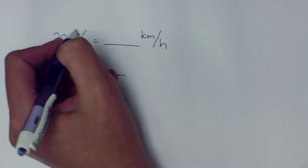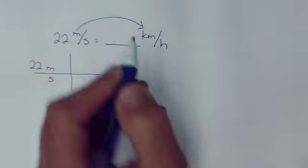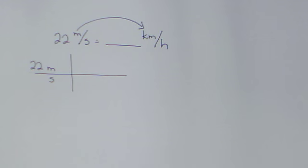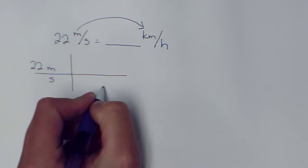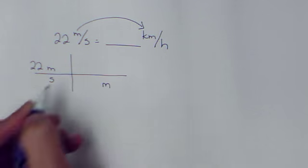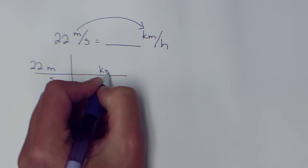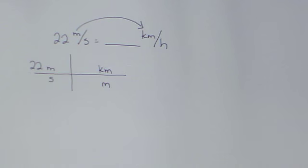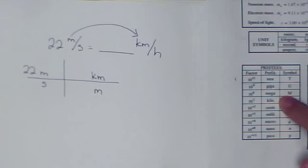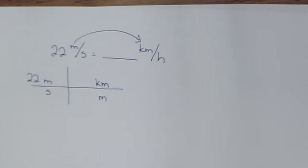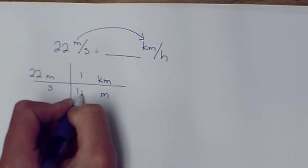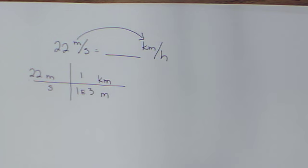I've got to get meters converted to kilometers, and that's the first thing I'm going to worry about. I want to get rid of my meters, so I'm going to put it next door downstairs, and I can go straight from meters to kilometers. Using my conversion chart, I find out that one kilometer contains one E3 meters.